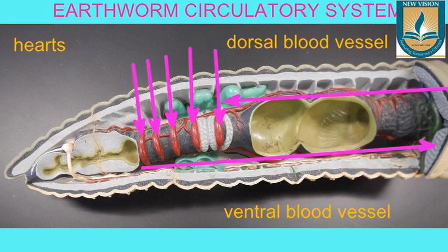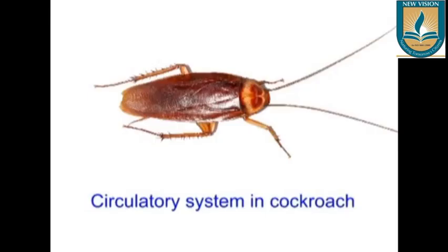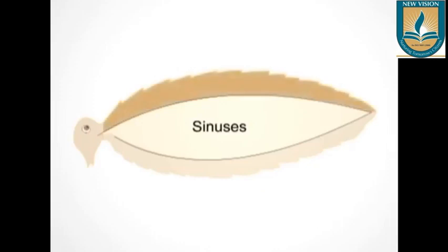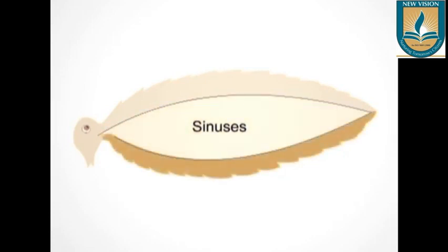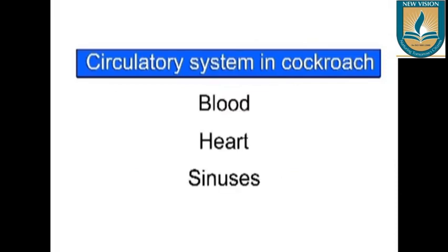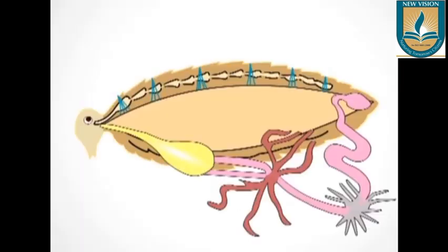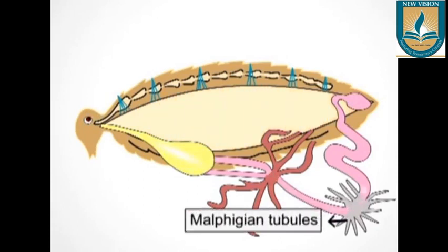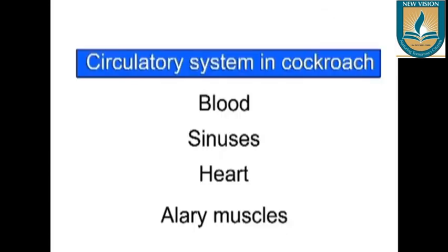Coming to the next organism — circulation in cockroach. In cockroach, blood flows into the sinuses. There are no particular blood vessels that distribute the blood; instead blood flows into the body cavity. This type of circulation is called open-type circulation. This type of circulation helps in distribution of nutrients to all parts of the body and elimination of excretory material to the excretory organs. This organism does not have enclosed blood vessels, and that is why this type of circulation is called open-type circulation.